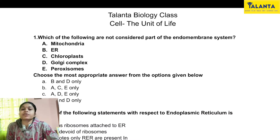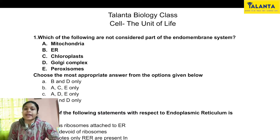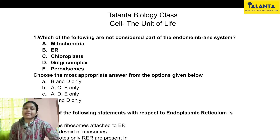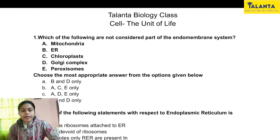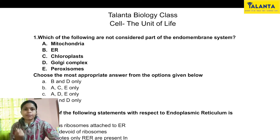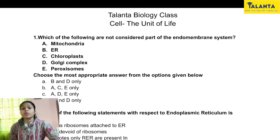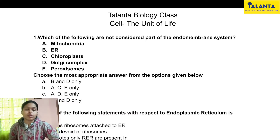Our first question for today: Which of the following are NOT considered part of the endomembrane system? To answer this, we need to know about the endomembrane system. In eukaryotic cells, double-membrane organelles act as a complex system where proteins are processed, packaged, and delivered. We will select organelles that belong to this system.